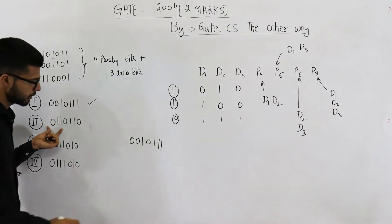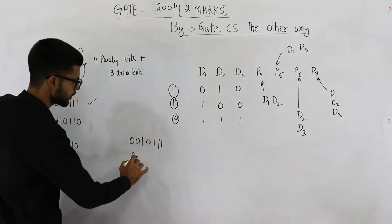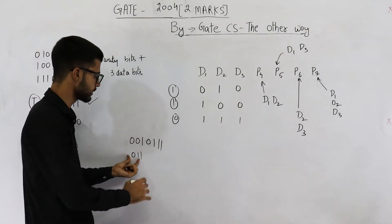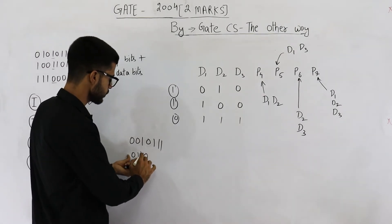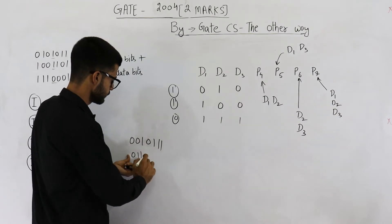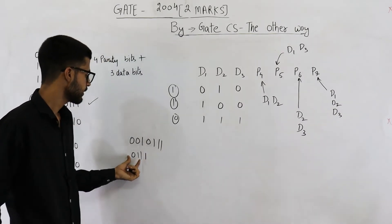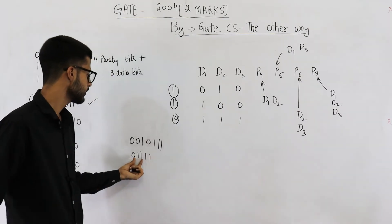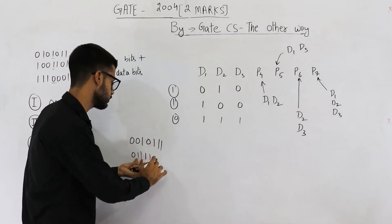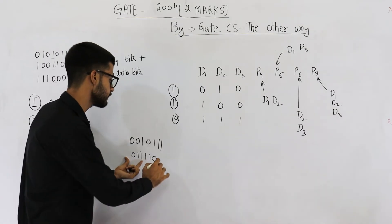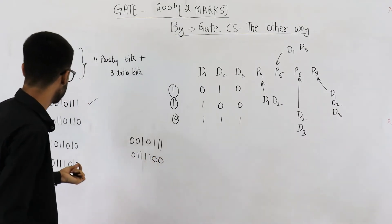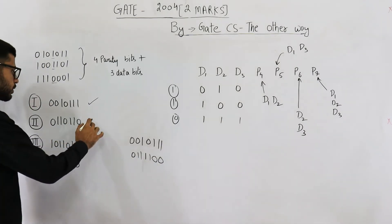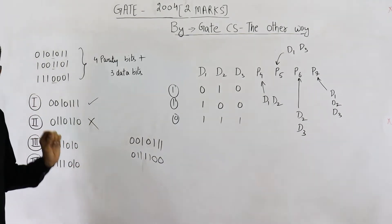Similarly, the second option has data bits 011. The parity of the first two bits is 1. Parity of the first and third bit is also 1. Parity of the second and third bit is 0. And the overall parity of these three bits is 0. So we need parity bits 1, 1, 0, 0 — but that pattern is not present in option 2, so this one is not valid.